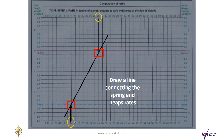Thirdly, when we have marked our spring and neap tidal stream rates, we'll draw a line which connects these two rates and we can extend this above and below the dotted lines.